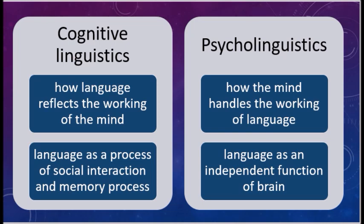Cognitive linguistics studies how language reflects the working of the mind, such as how different words in different languages are perceived — for example, color words. Whereas psycholinguistics studies how the mind handles the working of language, such as how different parts and areas of the brain handle language. Cognitive linguistics sees language as a process of social interaction and memory, whereas psycholinguistics sees language as an independent function of the brain — and considers that people with normal cognitive function may still have limited language ability, and vice versa.